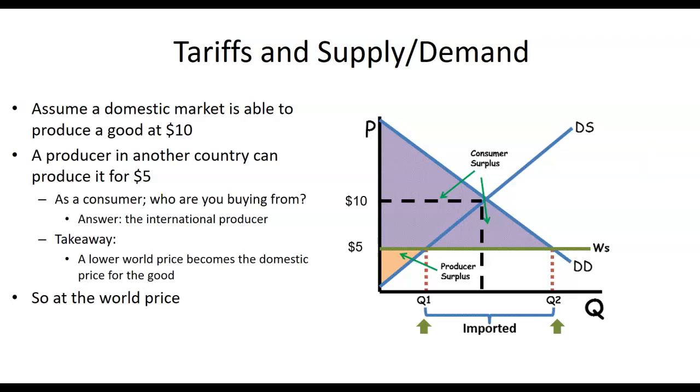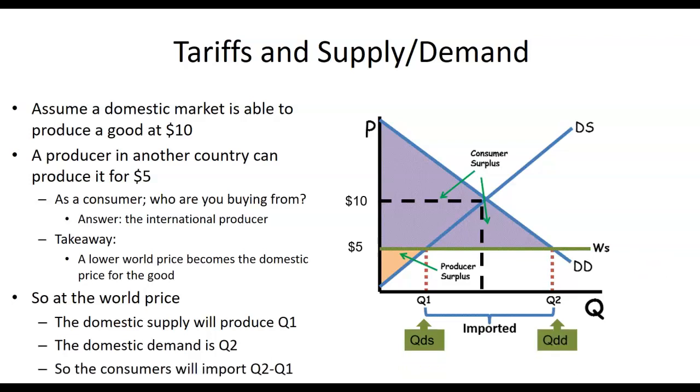So at the world price, which is this competitive $5 price, the domestic supply is going to be this Q1 level. At this $5 price, it goes straight across, I hit my supply curve, and I'm going to go straight down. The domestic demand is going to be at this $5, the consumers would like to have purchased Q2. They're going to import Q2 minus Q1.